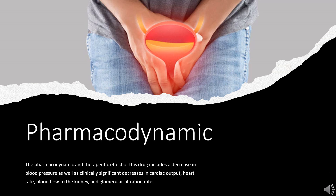Pharmacodynamics — effects on blood pressure: the pharmacodynamic and therapeutic effects of prazosin include a decrease in blood pressure as well as clinically significant decreases in cardiac output, heart rate, blood flow to the kidney, and glomerular filtration rate. The decrease in blood pressure occurs in both standing and supine positions. Many of these effects are due to vasodilation of blood vessels caused by prazosin, resulting in decreased peripheral resistance.